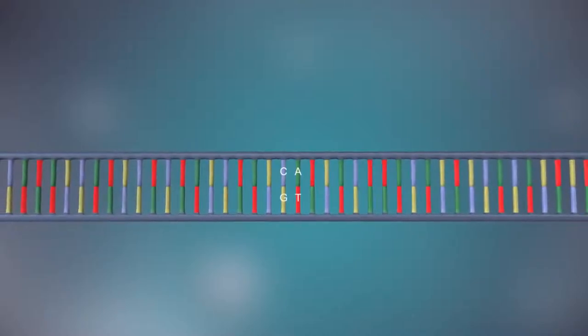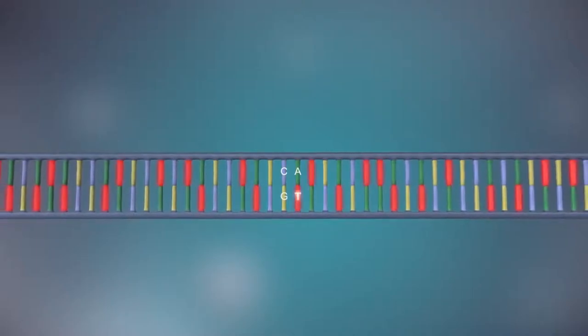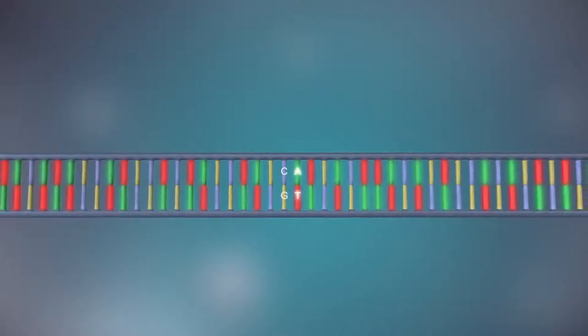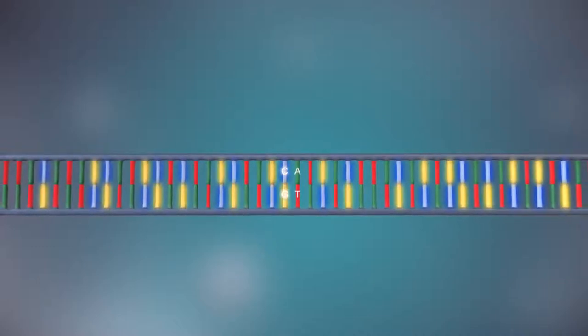The two strands are complementary. This means that wherever there's a T in one strand, there will be an A in the opposite strand, and wherever there's a C, there will be a G in the other strand.